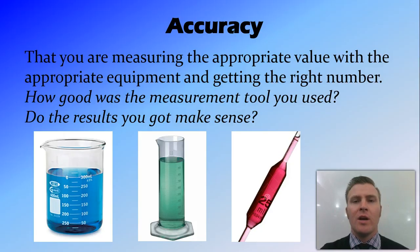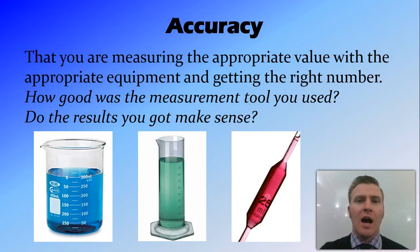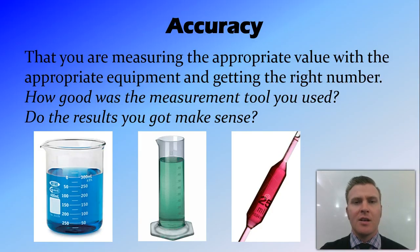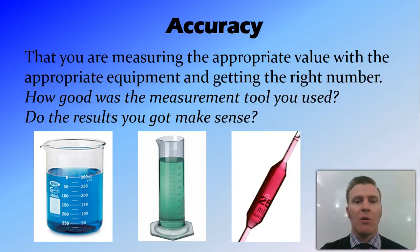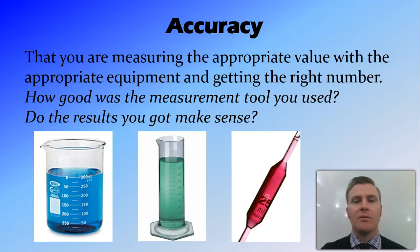Accuracy has to do with whether you're getting the right number and the equipment that you use to get that number. You need to ask yourself whether you're using the right tool for measuring and whether the results make sense. For example, using the gauge on the side of a beaker is one way to measure volume. It would be more accurate to use a measuring cylinder, and even more accurate to use a volumetric pipette, which is a very accurate piece of equipment for measuring volume.